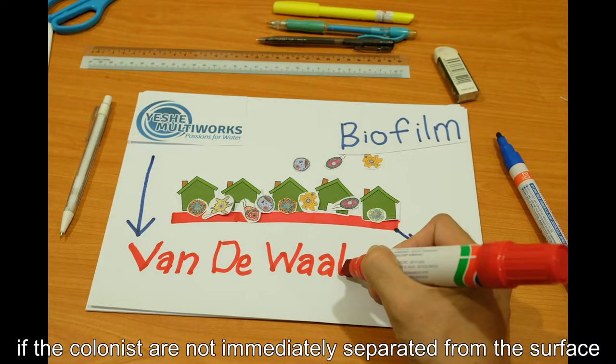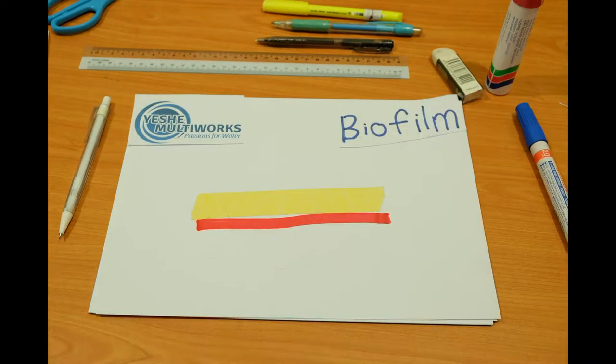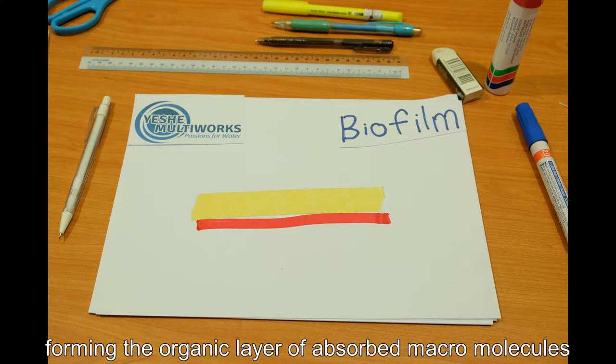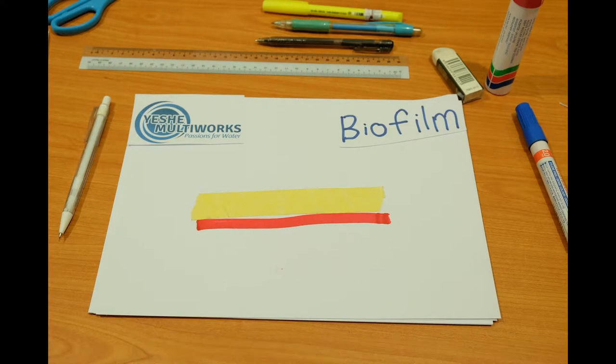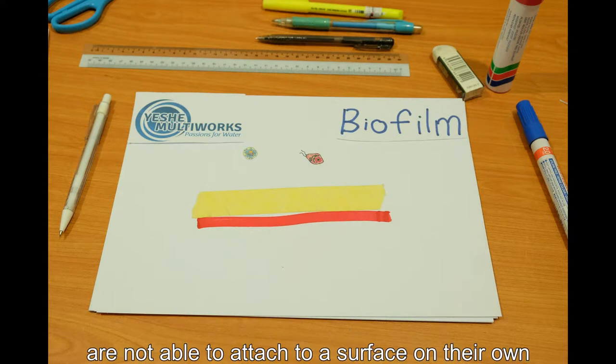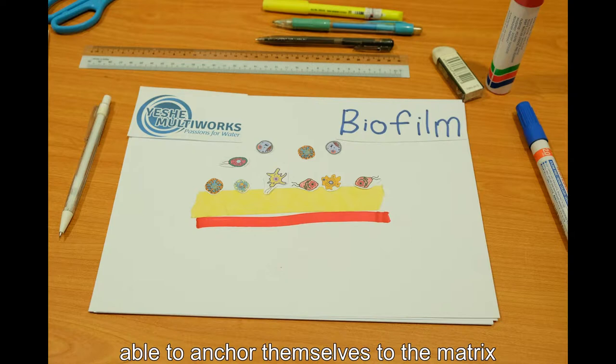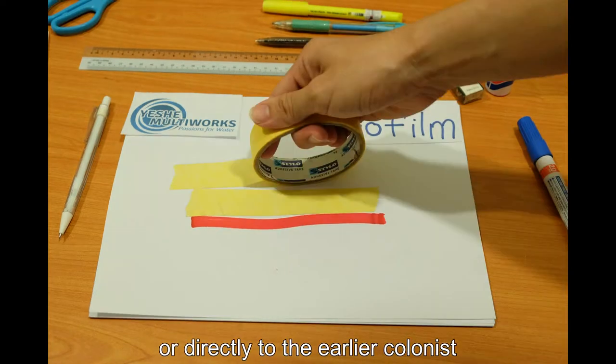If the colonies are not immediately separated from the surface, they can anchor themselves more permanently, forming organic layers of absorbed macromolecules. Some species are not able to attach to a surface on their own, but are sometimes able to anchor themselves to the matrix or directly to earlier colonies.